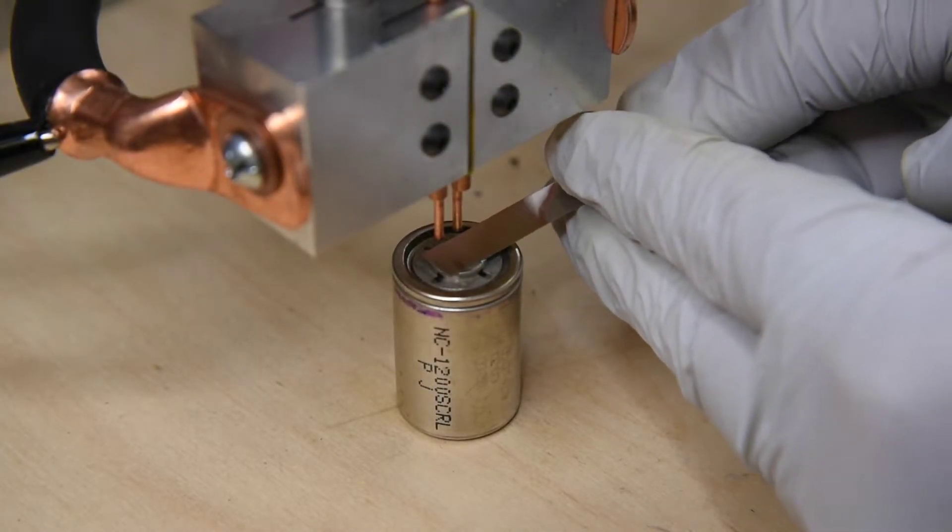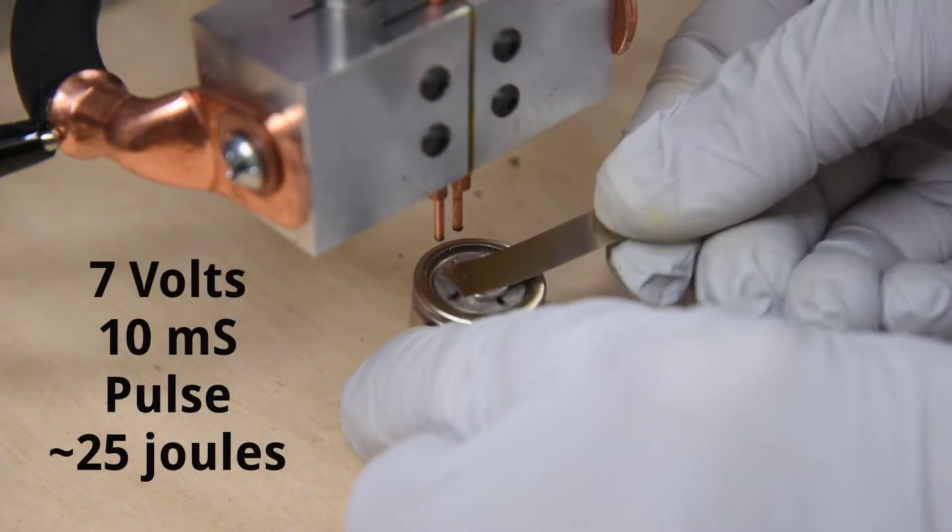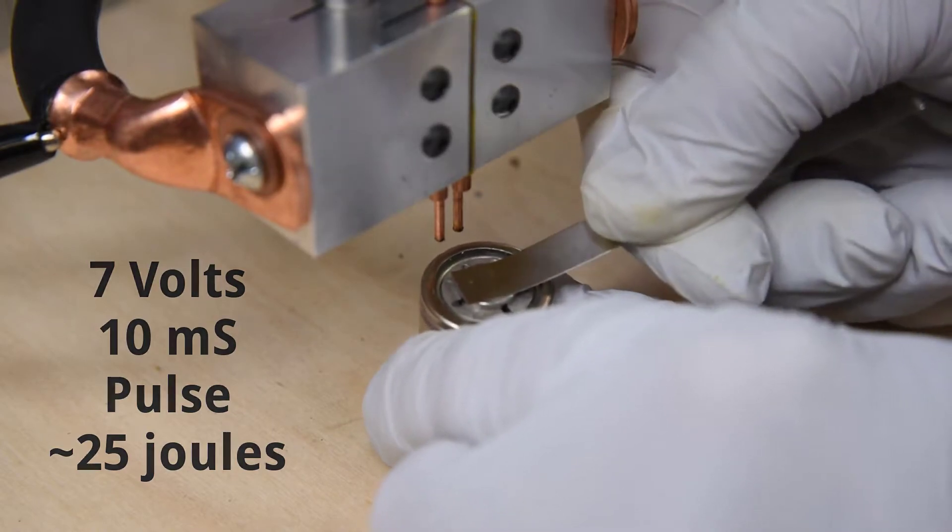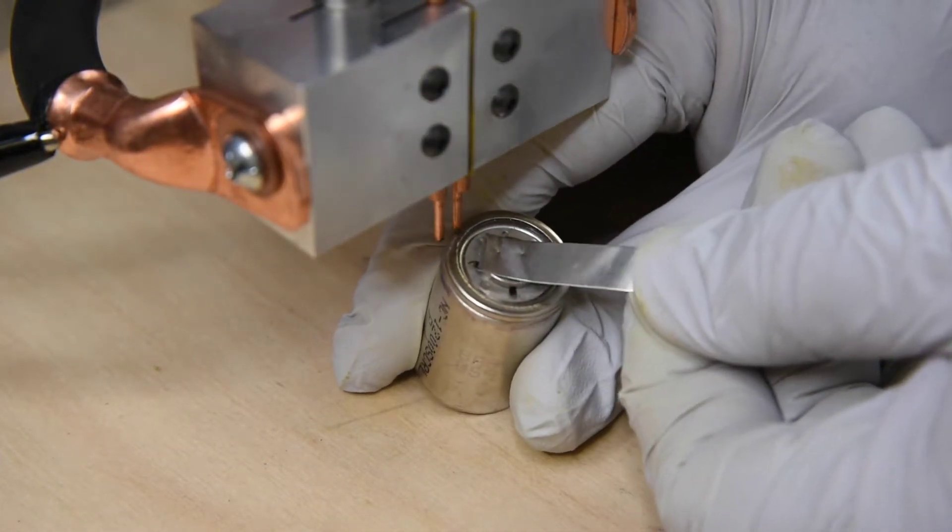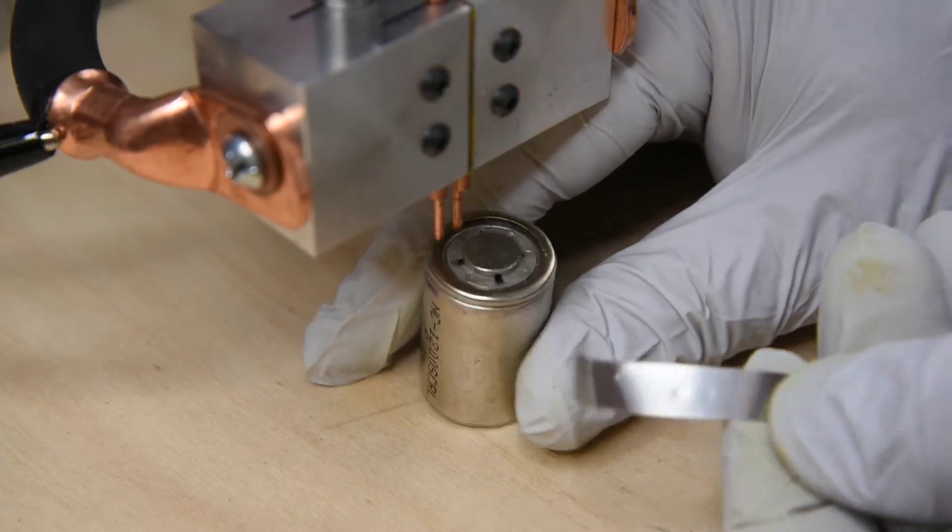Now to touch on what welds didn't do so well. Here at 25 joules, there is some stick, but the nickel strips pull off by hand without leaving any holes. This is definitely not going to hold up.